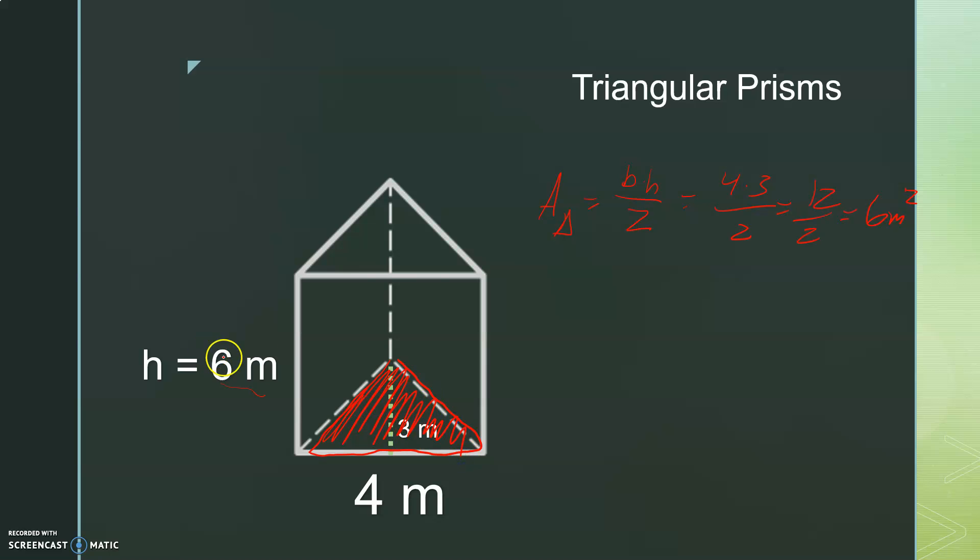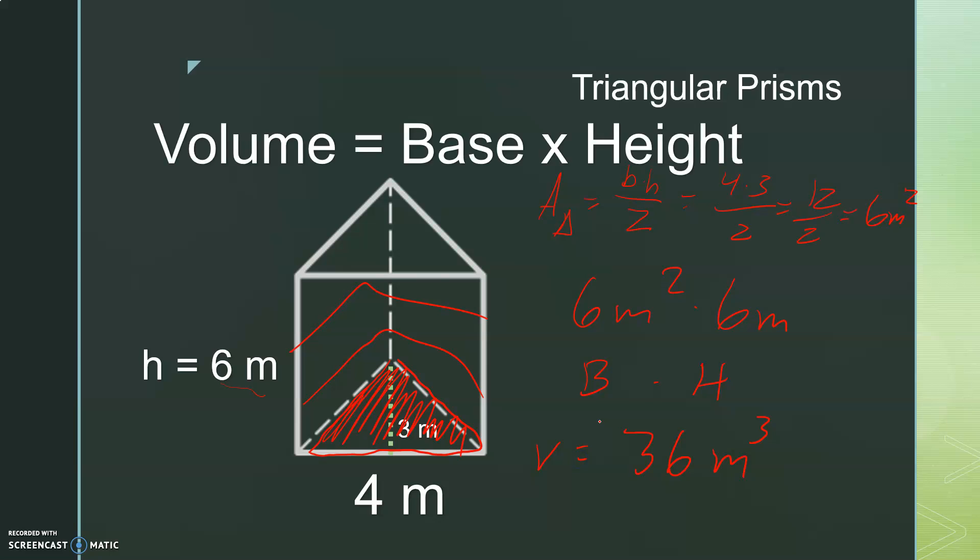Now, how many times is it stacked up? It's stacked up 6 times. So we take that 6 meters squared and multiply it by 6 meters, which is the height. This is big B base times height. And we get 36 cubic meters, which is the volume. Again, that volume formula is base times height. We get 36 cubic meters for this triangular prism.